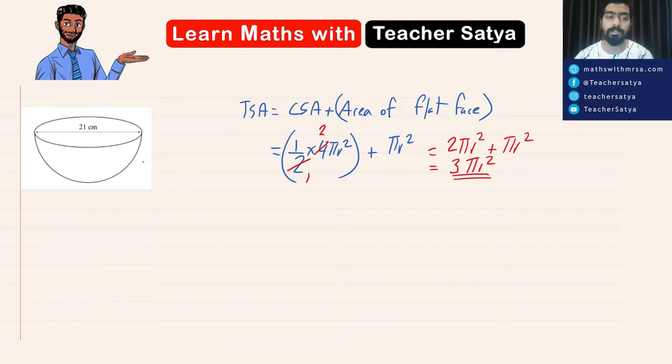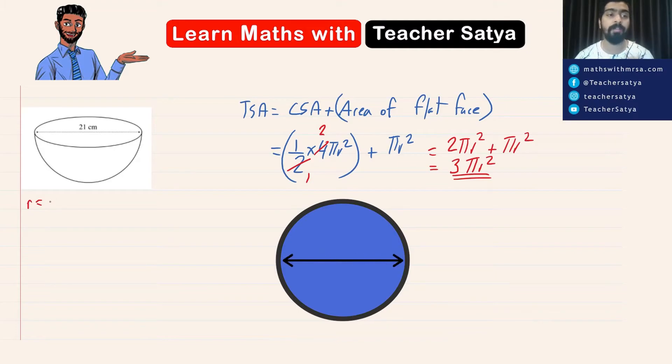Now in this question, as you see here, they have provided us with the diameter, but we need to know its radius to find the total surface area. Now we know that the radius is half of its diameter. The radius would be 21 over 2, which is equal to 10.5 centimeter. Right guys?